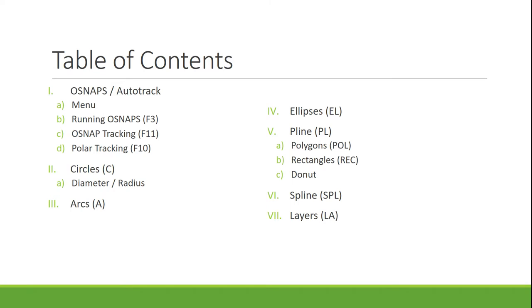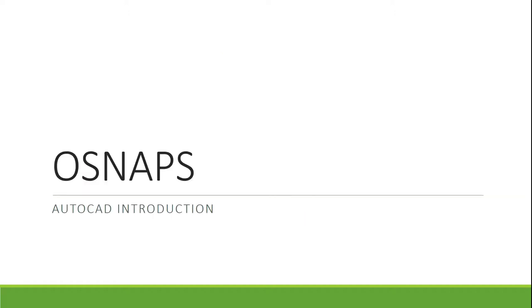So all the things that we're going to do — we're going to first take a look at the OSNAPs and AutoTracking. Then circles, arcs, ellipses, polylines, splines, and lastly layers.